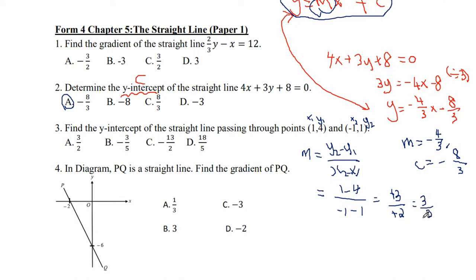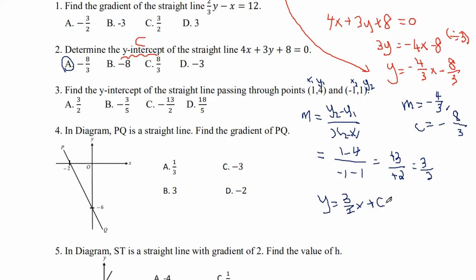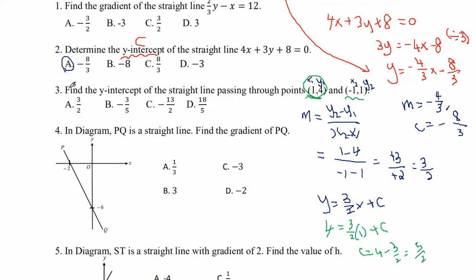We substitute m back: y equals to 3 over 2 x plus c. To find c, substitute point (1, 4): 4 equals to 3 over 2 times 1 plus c. So c equals to 4 minus 3 over 2 = 5 over 2. The answer is 5 over 2 — none of the given options match, so there is no answer for number 3.